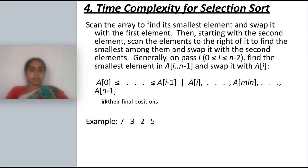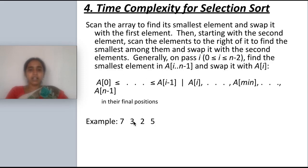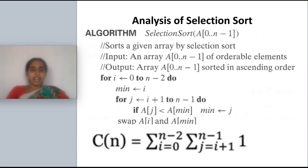Then the second minimum will be swapped with the first element, then the next minimum element will be swapped and placed in the third position. Likewise, every time you will be searching the minimum element and placing it. We are not going to cover the algorithm in detail — that is in a separate video lecture series — now we are going to perform only the analysis of the selection sort.